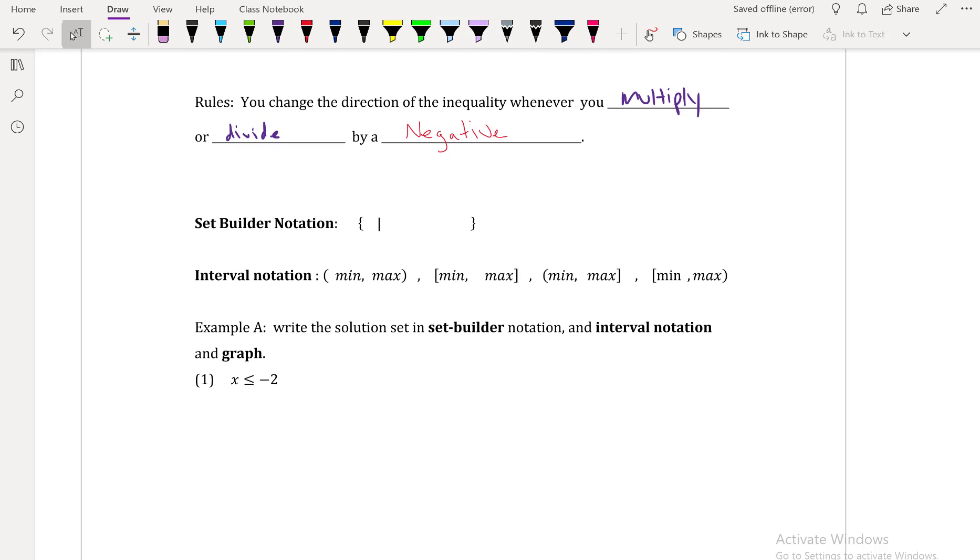So our set builder notation always has like these braces and then this line right here that represents such that. And for our interval notation you can either have your parentheses, you can have brackets, you can have parentheses and brackets, or a bracket and parentheses. And you always go from your smallest value to your biggest value.